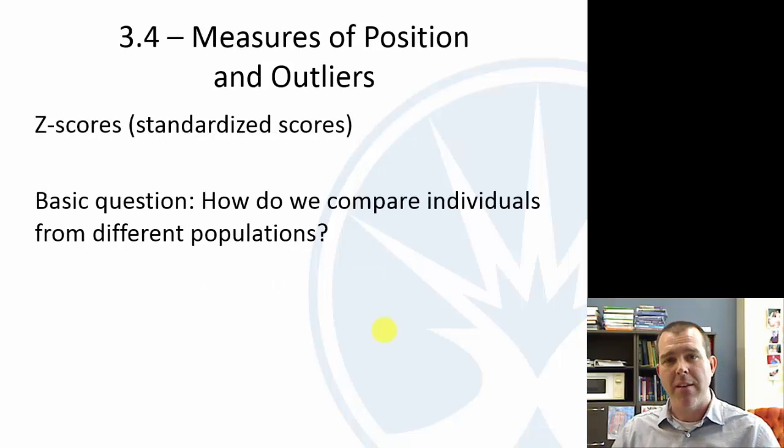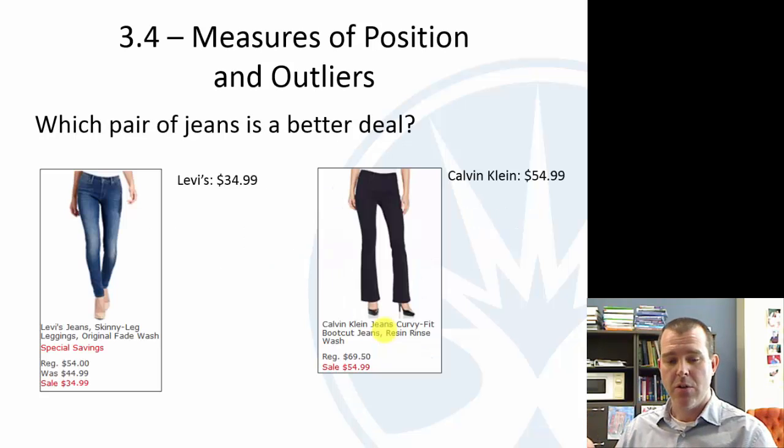So z-scores, the basic question is, if I have two different individuals, how can I compare them if they're not from the same population? So I have an example here from Macy's website. Two different pairs of jeans, Levi's, Calvin Klein. Obviously, Levi's is cheaper. They both are on sale. But then the question is, which is a better deal compared to their peers?